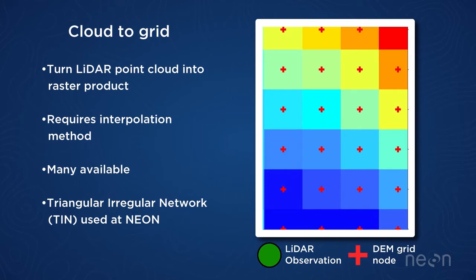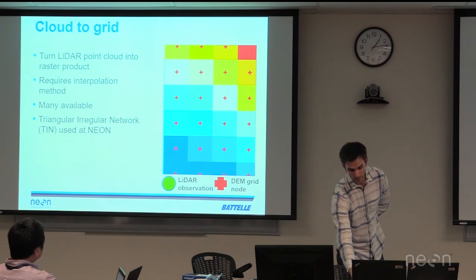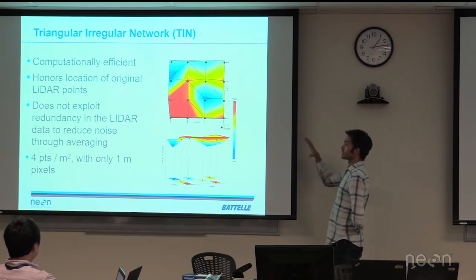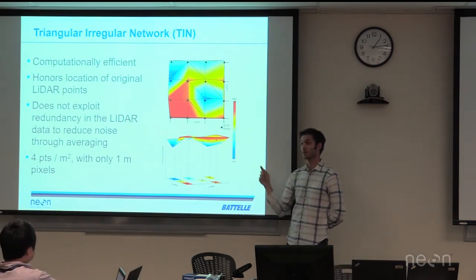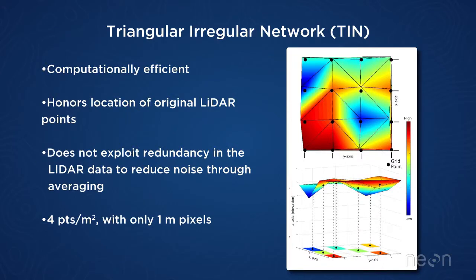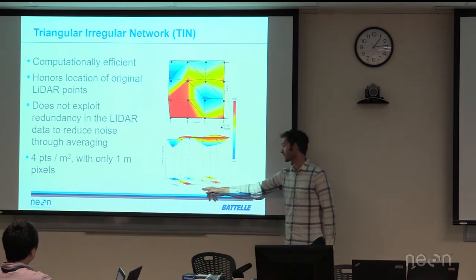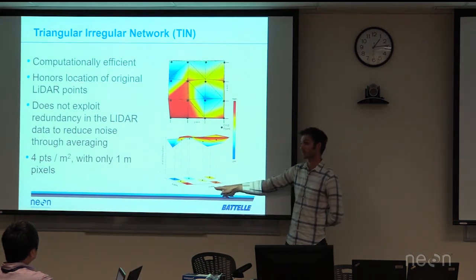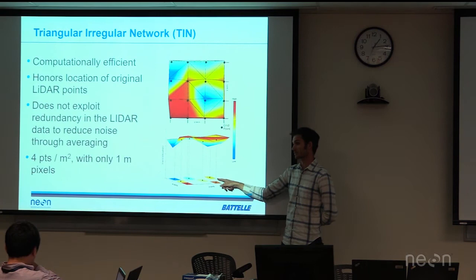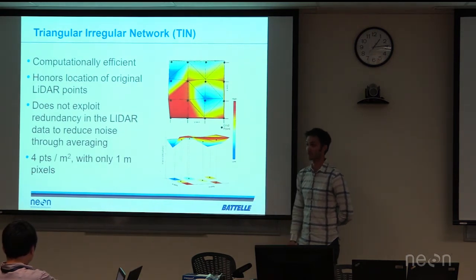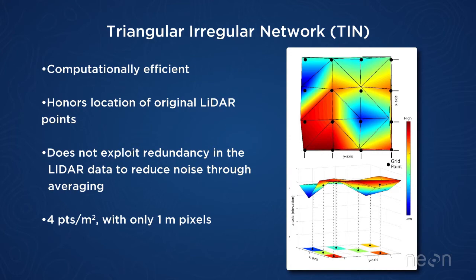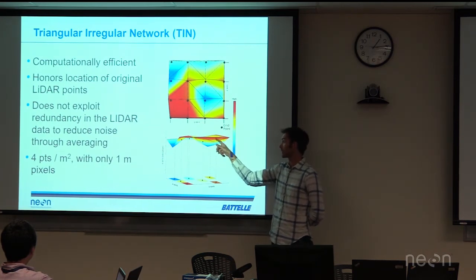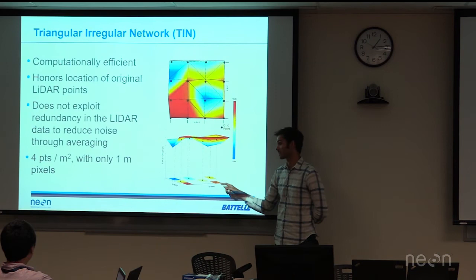There are many different interpolation methods available, but at NEON we use a triangular irregular network, which creates linear connections between all the points forming triangles. You can lay a grid underneath that triangular irregular network, interpolate the elevation from the plane of the triangle that overlaps each raster cell, and assign that elevation to the raster cell. That's how we get the elevation from the raw point cloud — we interpolate between LiDAR observations, pull the elevation from the triangular plane, and assign it to the raster grid.